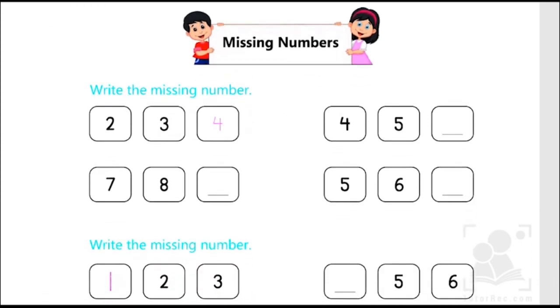As you can see kids, the first example has been done for us. 2, 3, and number 4 has already been written which was missing before. Now we have to follow the same pattern and find out what comes in the missing place. So let's start. 4, 5. Now we have to find out what comes after 5.